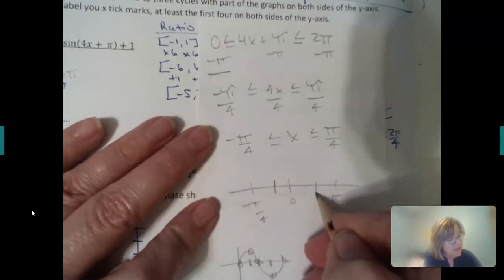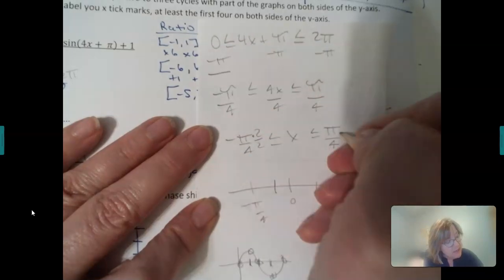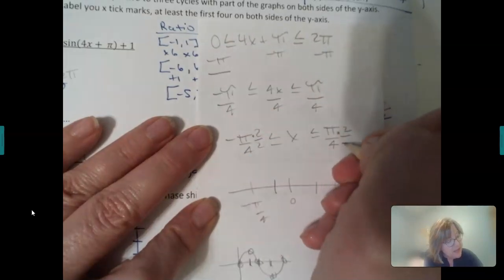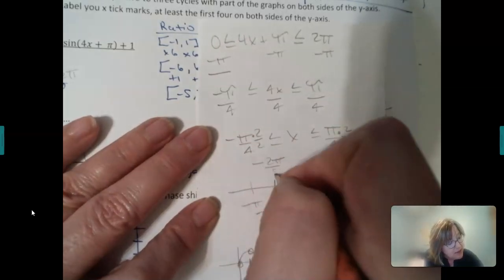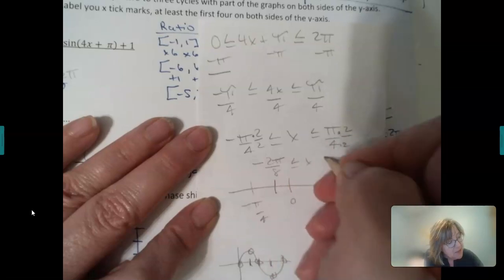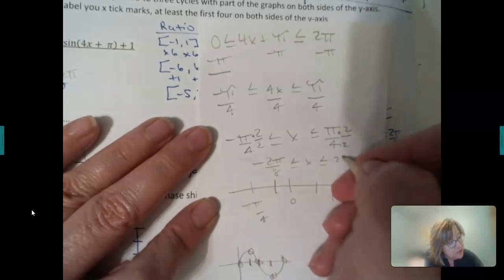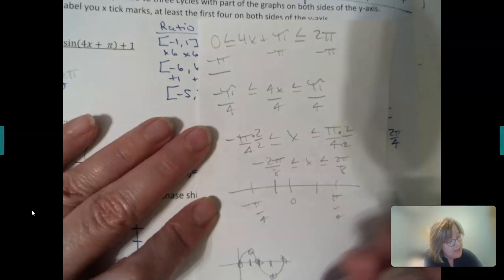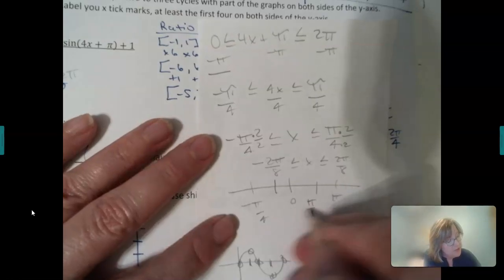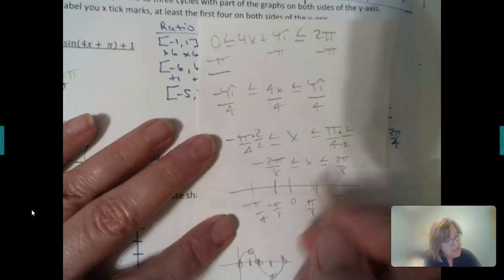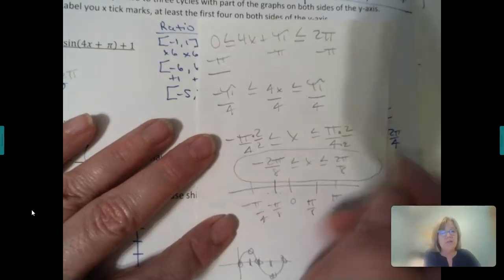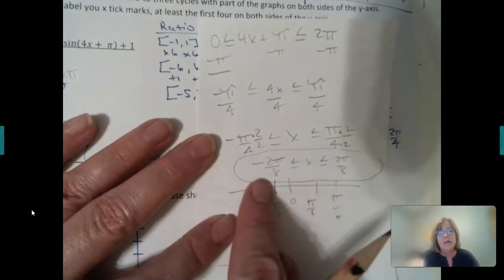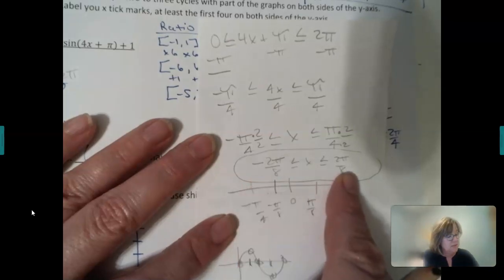So I only have 2 pieces, so what I need to do is cut these. And so what I'm going to do is get a common denominator here. Times 2 times 2, negative 2 pi over 8, and then 2 pi over 8. Now notice, if I do that unit, so here's pi over 8, negative pi over 8, now I have 4 pieces. This gives me what I want.